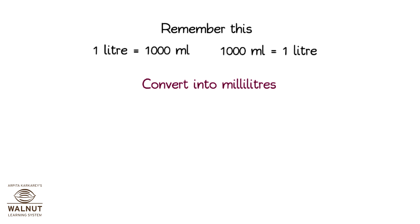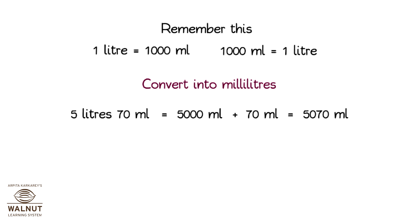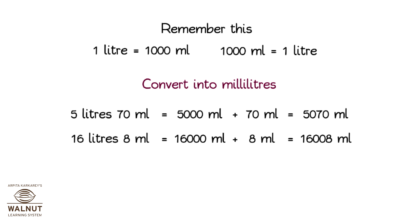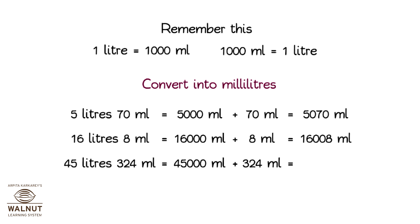Convert into millilitres: 5 litres 70 millilitres is equal to 5000 mL plus 70 mL = 5070 millilitres. 16 litres 8 millilitres is equal to 16,000 mL plus 8 mL = 16,008 millilitres. 45 litres 324 millilitres is equal to 45,000 mL plus 324 mL = 45,324 millilitres.